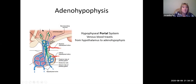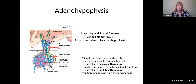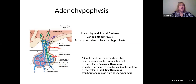With the hypophyseal portal system, hormones made in the hypothalamus travel in venous blood directly to the adenohypophysis — not to the neural hypothesis, only to the adenohypophysis — delivering blood right where all the endocrine cells are. The adenohypophysis makes and secretes its own hormones, but only if a releasing hormone arrives via the portal system. If an inhibiting hormone arrives, those endocrine cells stop releasing their hormones.